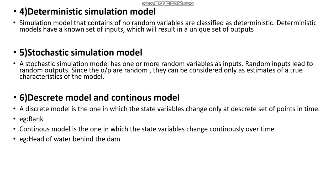The last type includes discrete model and continuous model. A discrete model is one in which the state variables change only at a discrete set of points in time — for example, a bank. A continuous model is one in which the state variables change continuously over time — for example, the head of water behind a dam.